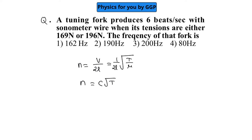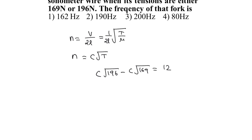We can write c√196 - c√169 = 12, which simplifies to c(14 - 13) = 12, giving us c = 12.